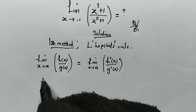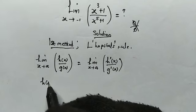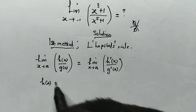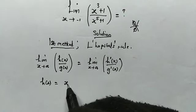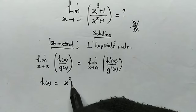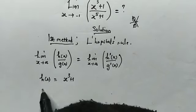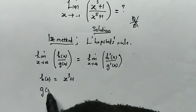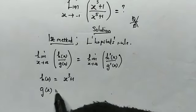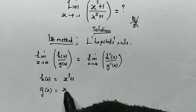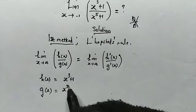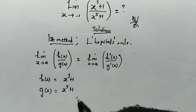Comparing this with our given limit, we find that our h(x) is equal to x cubed plus 1, and our g(x) is equal to x to the power of 5 plus 1.